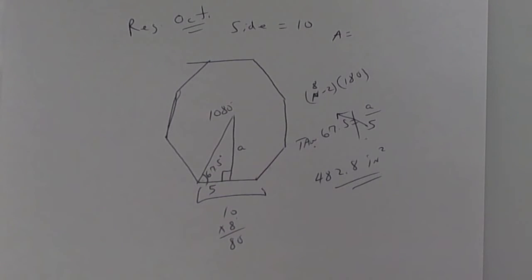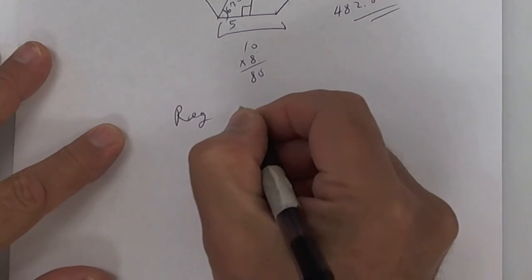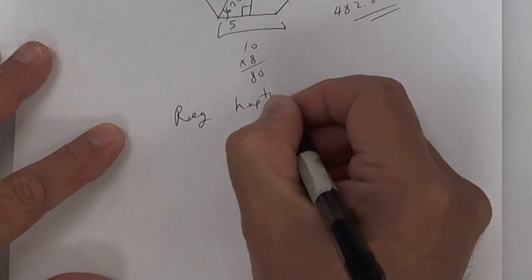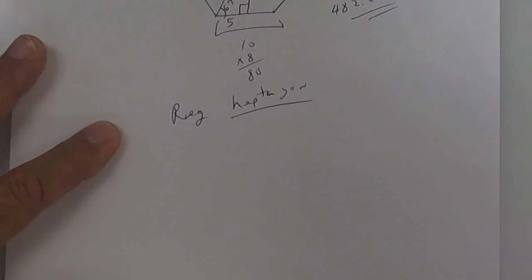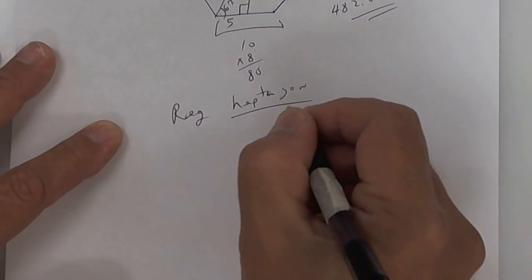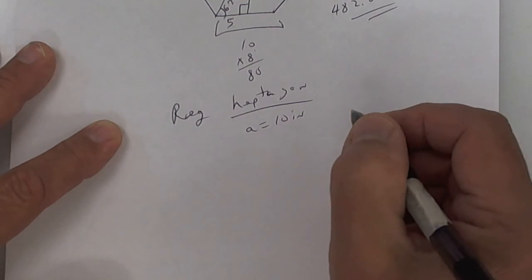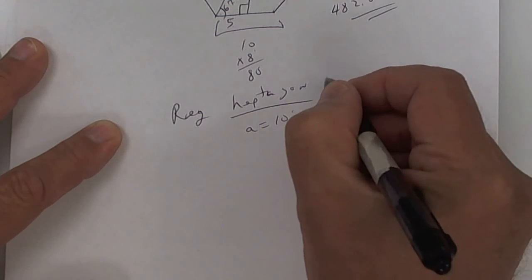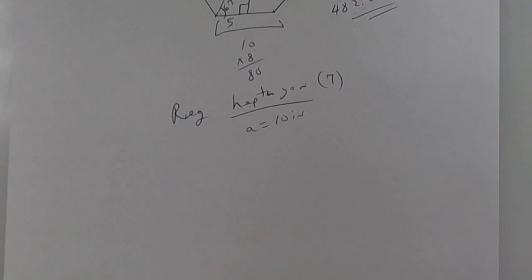Let me give you one more. I want you to do a regular heptagon — a heptagon is a seven-sided figure. Let's say the apothem is equal to 10, and I want you to find the area. Try to draw the heptagon — remember, it's got seven sides. Then your formulas and your triangle, and good luck on that one.